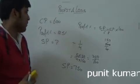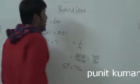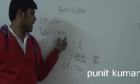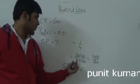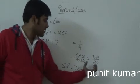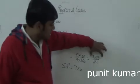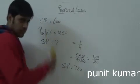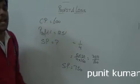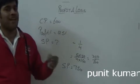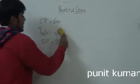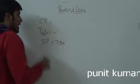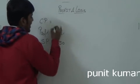Now let's reverse the equation. This concept doesn't require any formula — it's simple and basic. If the selling price is 750 rupees and there is a 25% profit, then SP ratio is 5 and CP ratio is 4. So 5 parts equals 750, meaning each part is 150. Therefore CP equals 4 times 150 equals 600 rupees.